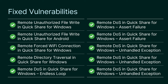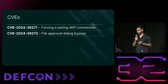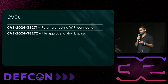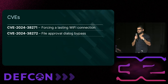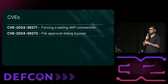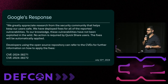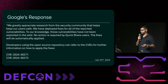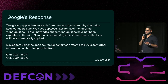We reported all of these vulnerabilities to Google at the end of January this year. They confirmed they fixed every one of them. Google decided to issue two CVEs for these 10 vulnerabilities: the first CVE addresses how two vulnerabilities can force a persistent Wi-Fi connection; the second CVE deals with bypassing the file approval dialogue in Windows. Google was very responsive throughout the process, confirming and reproducing each reported vulnerability. We wanted to thank them for their collaboration.